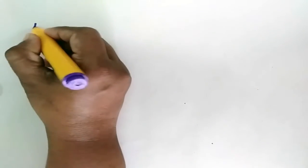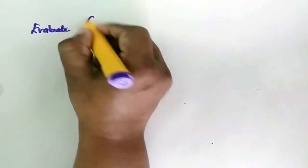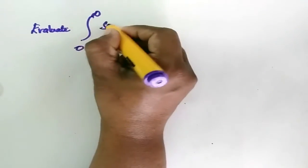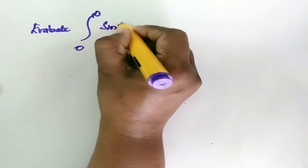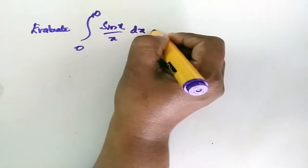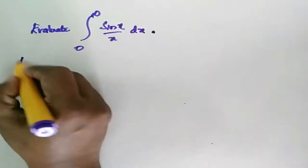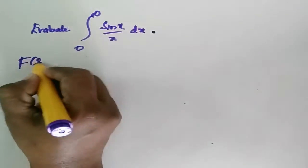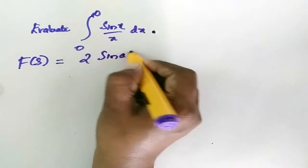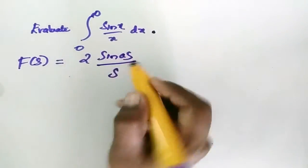So the complex Fourier transform F(s) equals 2·sin(as)/s. Now we use this result to evaluate the integral from 0 to infinity of sin(x)/x dx.